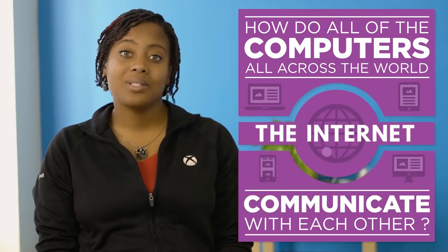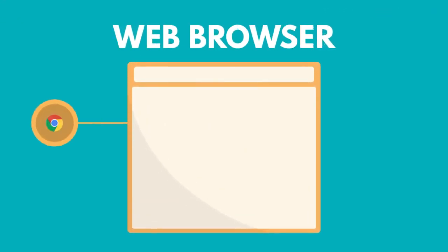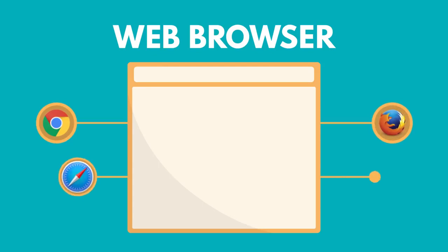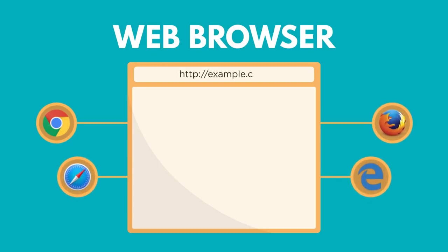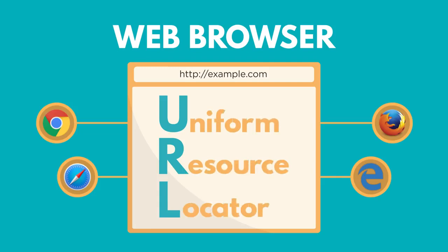Let's look at web browsing. First, you open a web browser — it's the app you use to access web pages. Next, you type in the web address or URL, which stands for Uniform Resource Locator, of the website you want to visit, like tumblr.com.